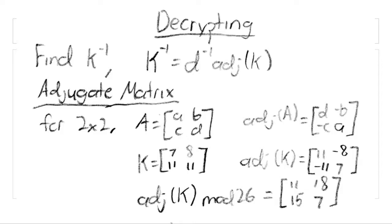Which, once we modulo by 26, gives us a final adjugate matrix of 11, 18, 15, and 7.